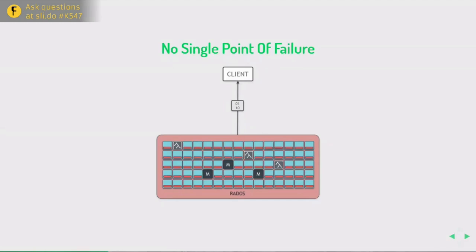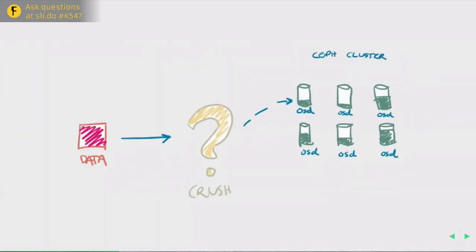One key thing about Ceph is that there is no single point of failure in the cluster — no single entry point that everything has to go through. Clients use the CRUSH algorithm to figure out where the data they need is or should be, and then go directly to those nodes. You take a piece of data, use CRUSH to figure out where it should be, go to the OSD, and either read from or write to it.